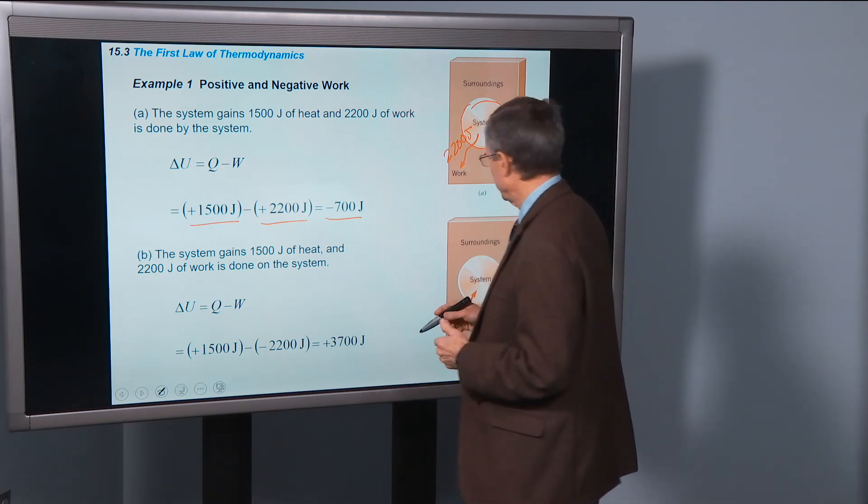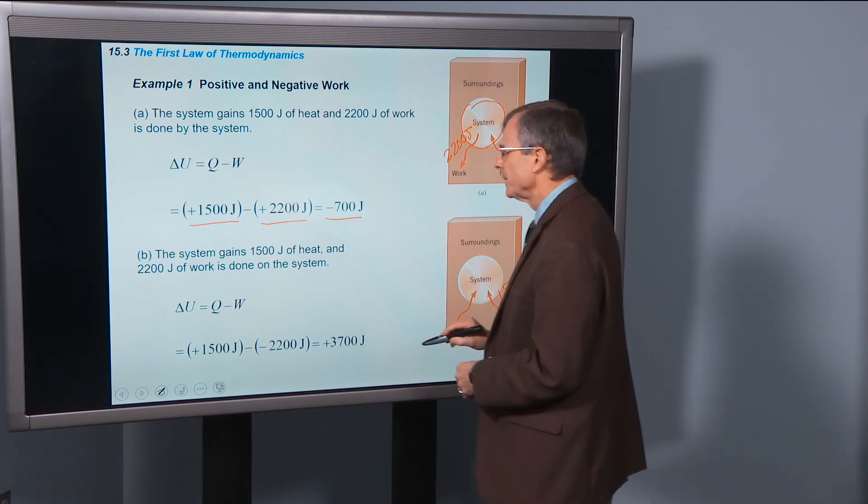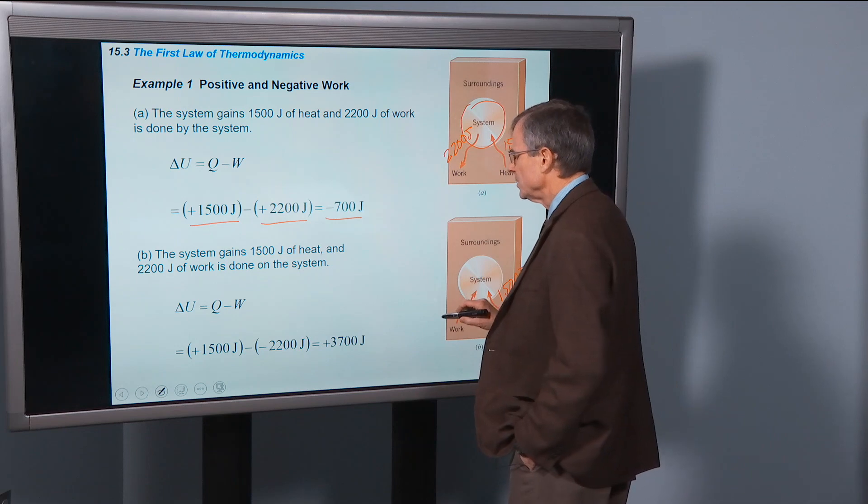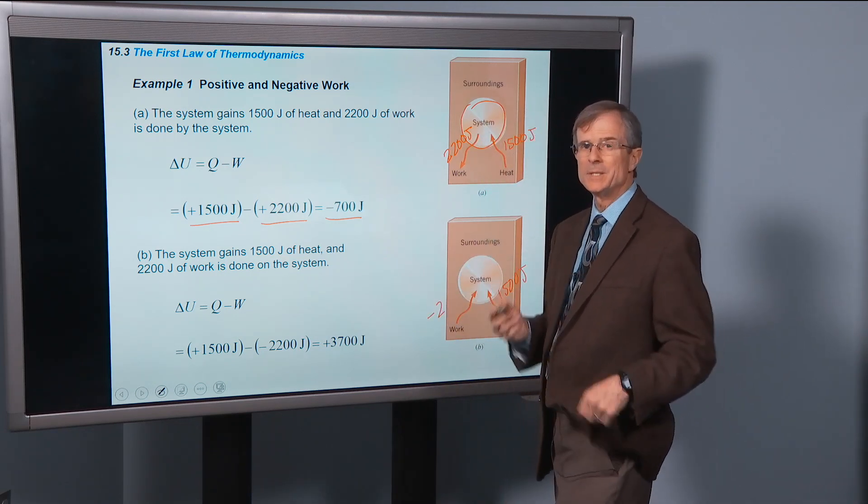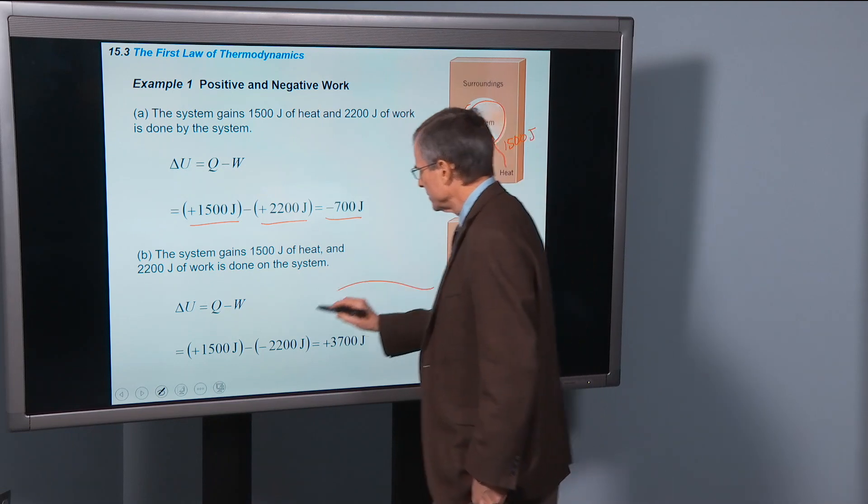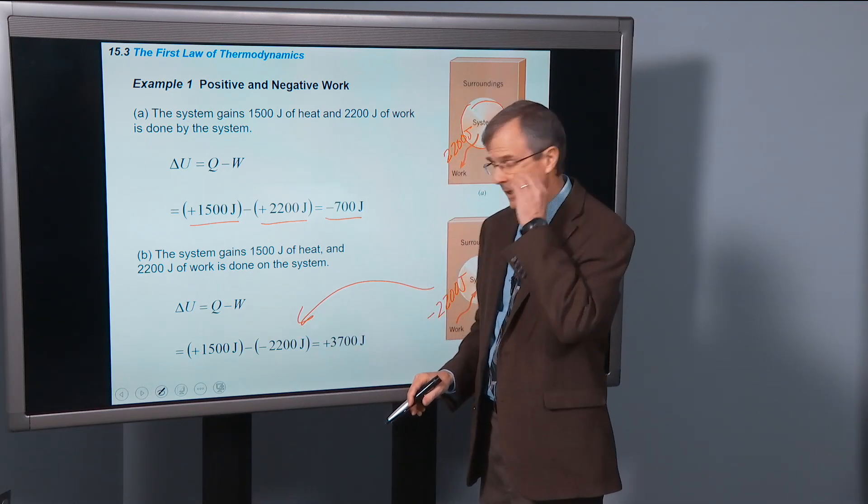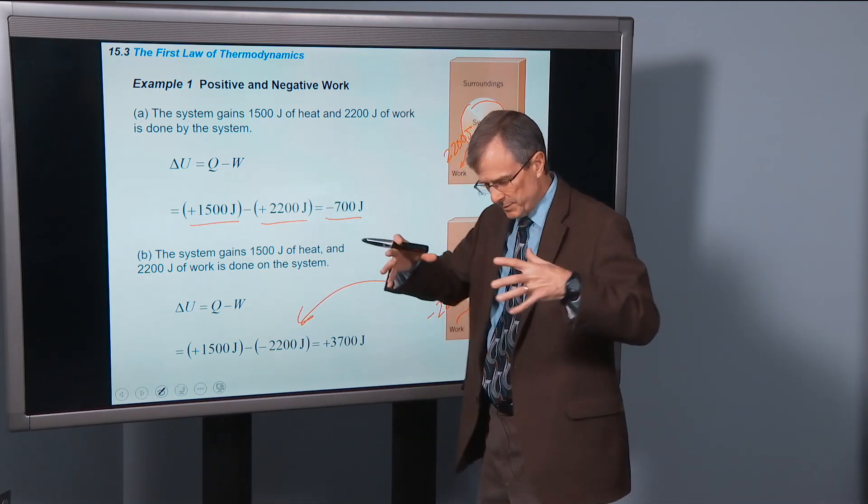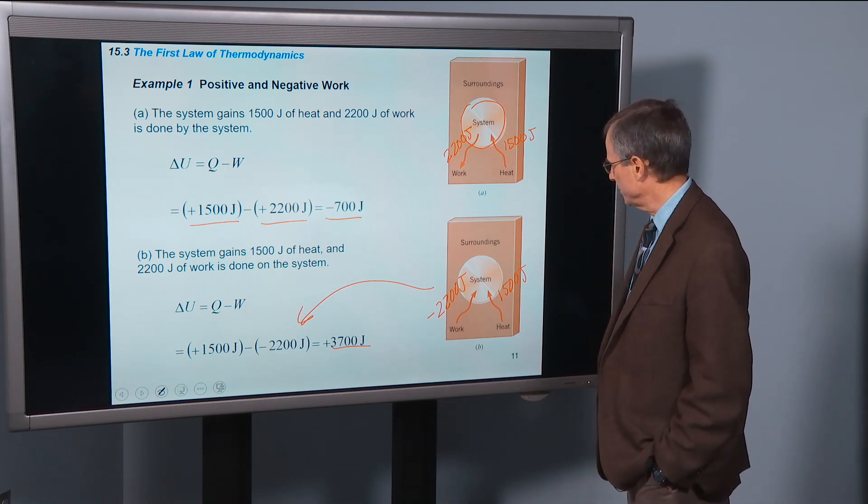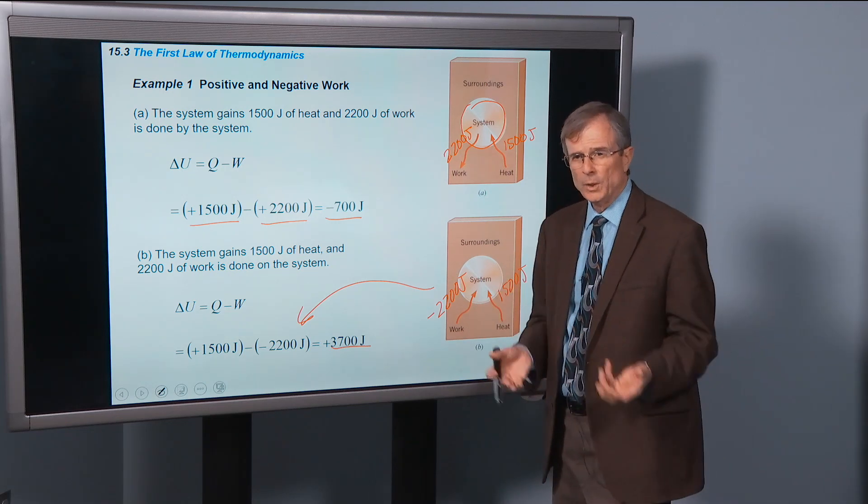So what about the case where it's gaining 1500 joules again, same as before, but 2200 joules of work is done on the system? So that work is a negative number now because it's done on the system instead of by the system. And so Q minus W, we got 1500 minus a minus. That's the case we just talked about, where the work is done on the system, somebody pushing in on the walls of that balloon. We get a positive increase in the internal energy.